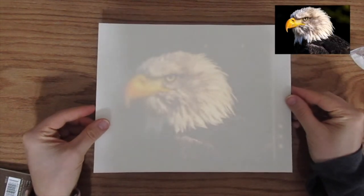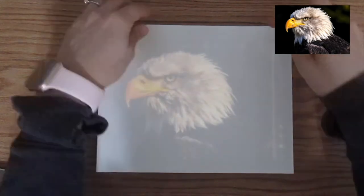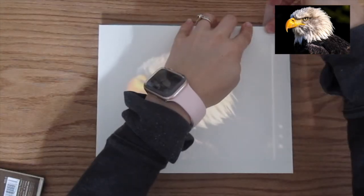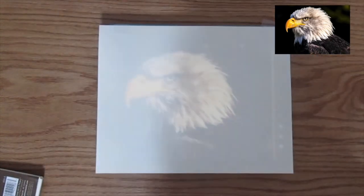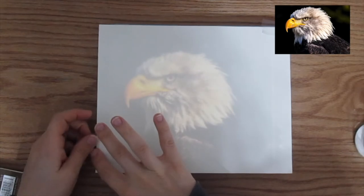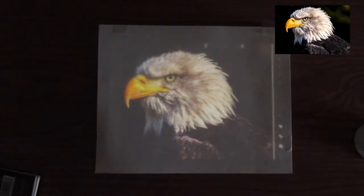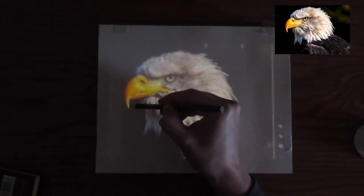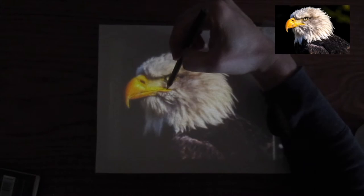Alright guys, today's first method is going to be tracing. You're going to want to go ahead and tape your paper over the tablet. You just want to make sure that there's no sliding that could lead to messing up your line work. Make sure that you turn off the lights; that's going to make the background really illuminate up through the paper and make it easier for you to see all the details.